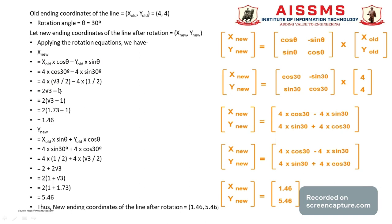Substituting the values of X_old, cos(theta), and sin(theta), we get X_new = 1.46. Similarly, for Y_new, the equation is X_old × sin(theta) + Y_old × cos(theta). Putting in the values, Y_new = 5.46. So the new coordinates after rotation are (1.46, 5.46).